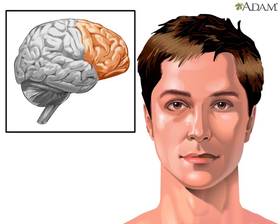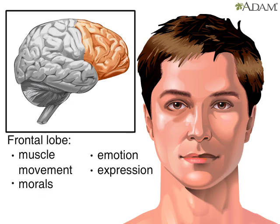Voluntary body movements are controlled by a region of the frontal lobe. The frontal lobe is also where we shape emotional reactions and expressions.